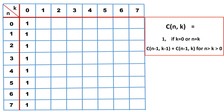Similarly, when n equals k the value is also 1. When n and k are both 0 it is already 1. When n equals 1 and k equals 1, we make it 1. When n equals 2 and k equals 2, we make it 1. Likewise for n equals 3, k equals 3; n equals 4, k equals 4; n equals 5, k equals 5; n equals 6, k equals 6; and n equals 7, k equals 7 — all are 1. So we have filled in all the base cases.